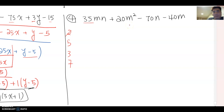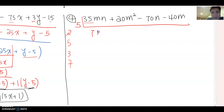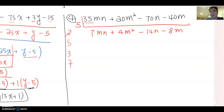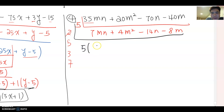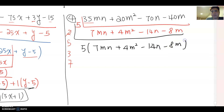Five works because all four constants end in zero or five, so I factor by five. This gives 7mn plus 4m squared minus 14n minus 8m. Now do you see another common factor among all four terms? No — so the factoring so far is five times (7mn plus 4m squared minus 14n minus 8m).